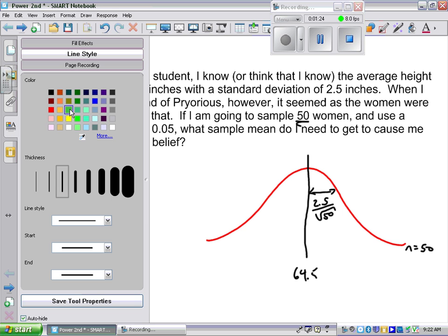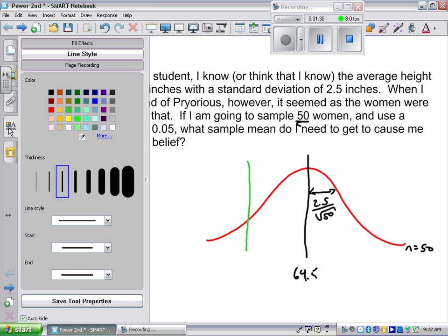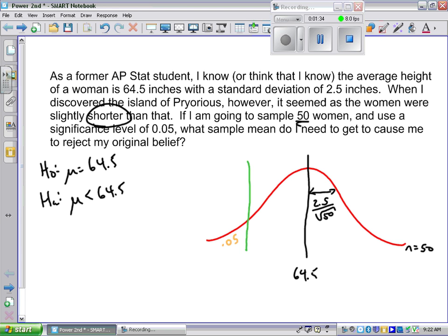Now, it says, hey, let's put a fence here at the 5% alpha level. So if there's my fence, what do I do if I get an answer to the right of the fence? On this one, I'm going to fail to reject H0, and over here, I'm going to reject H0.